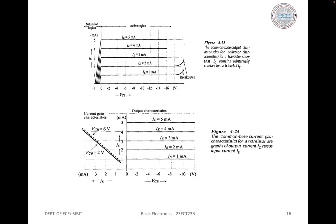When VCB is reduced to zero, IC is still close to its value because even with no externally applied voltage, a barrier voltage exists at the collector-base junction, assisting the flow of IC. The charge carriers constituting IC are minority carriers; the reverse-bias collector-base voltage pulls them across the junction. The collector-base barrier voltage has the same polarity and also pulls carriers to the collector. IC is reduced to zero only when VCB is increased positively into forward bias — the region of forward-biased collector-base junction is known as the saturation region, and the reverse-biased region is the active region, the normal operating region.